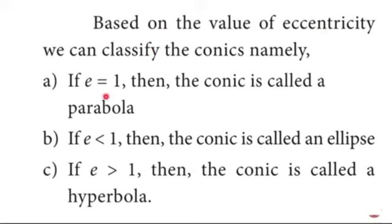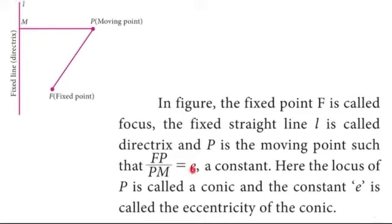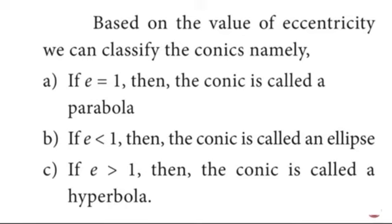Based on the value of eccentricity, we can classify the conics. If e is equal to 1, that means FP and PM are equal — the distance between the fixed point and the moving point equals the distance between the fixed line and the moving point. If e equals 1, the conic is called a parabola. If e is less than 1, the conic is called an ellipse. If e is greater than 1, the conic is called a hyperbola.